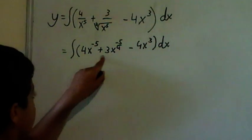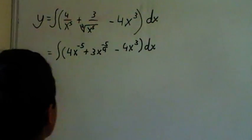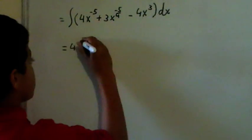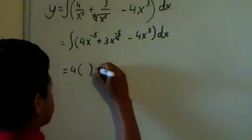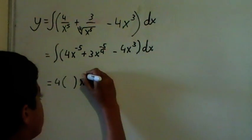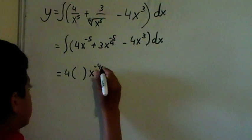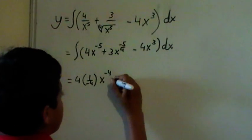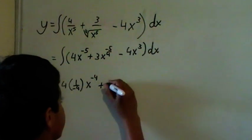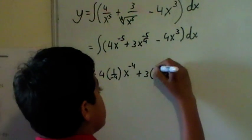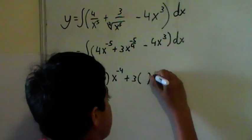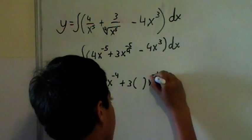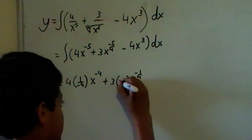Now, I'll integrate this using this rule. Equals 4 bracket times the reciprocal minus 5 plus 1 minus 4. Reciprocal of that is 1 over minus 4 plus 3 times the reciprocal. Reciprocal of that is 4.